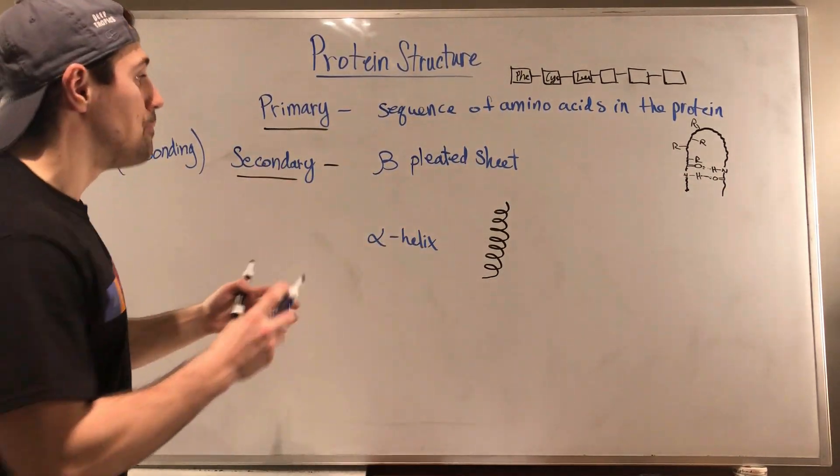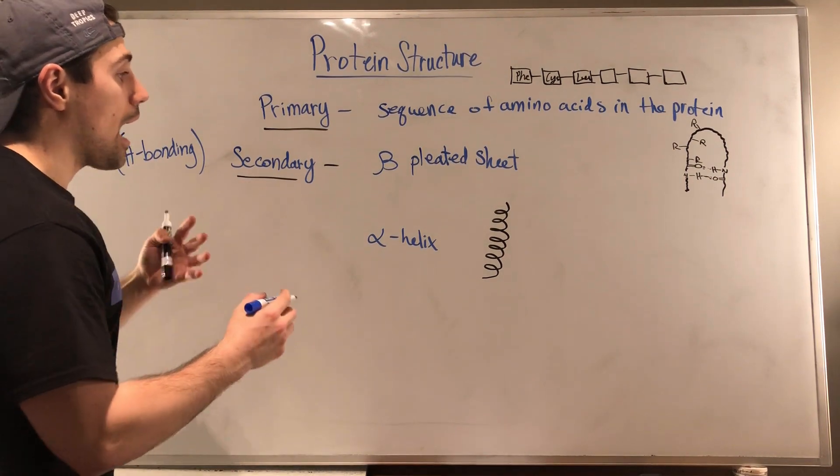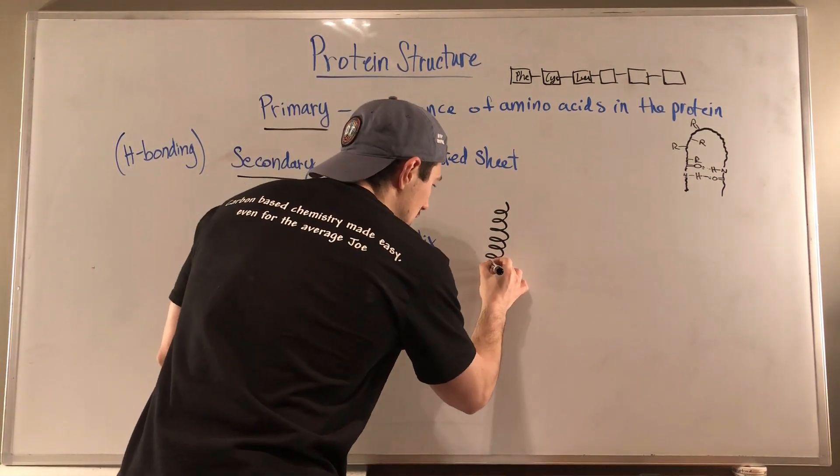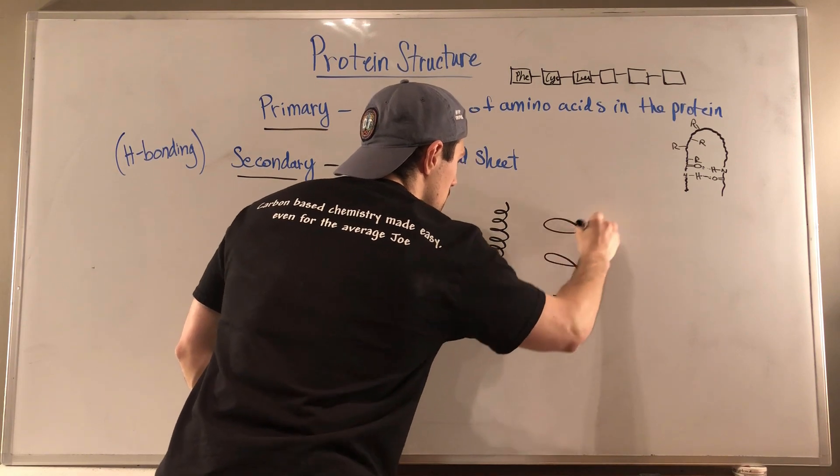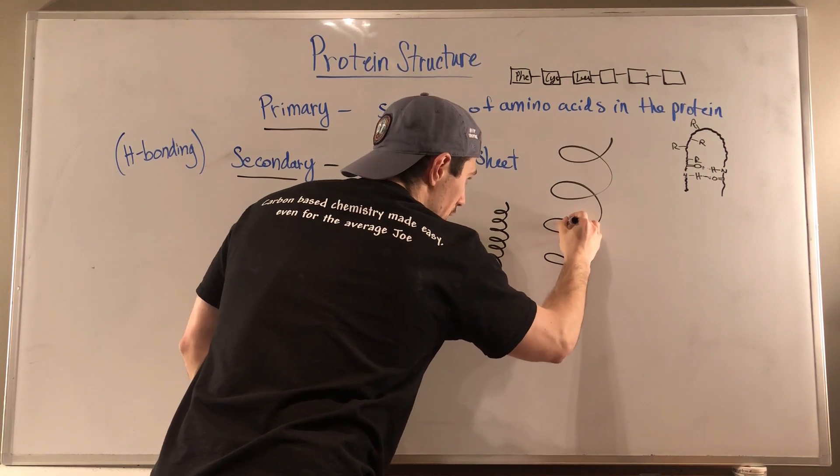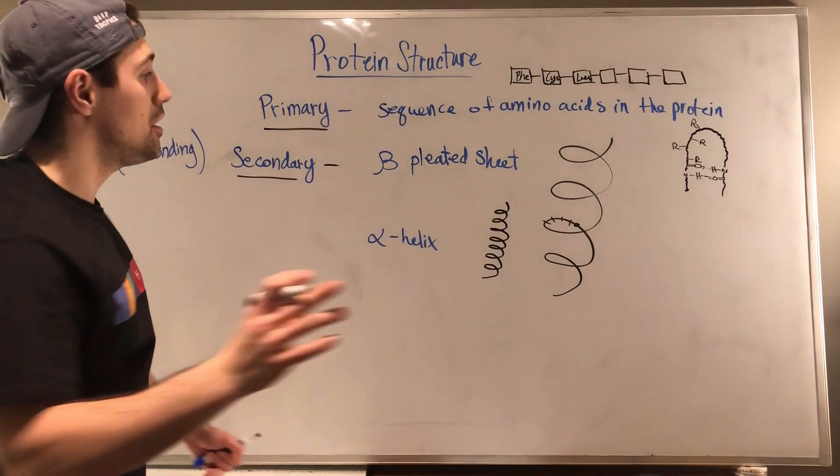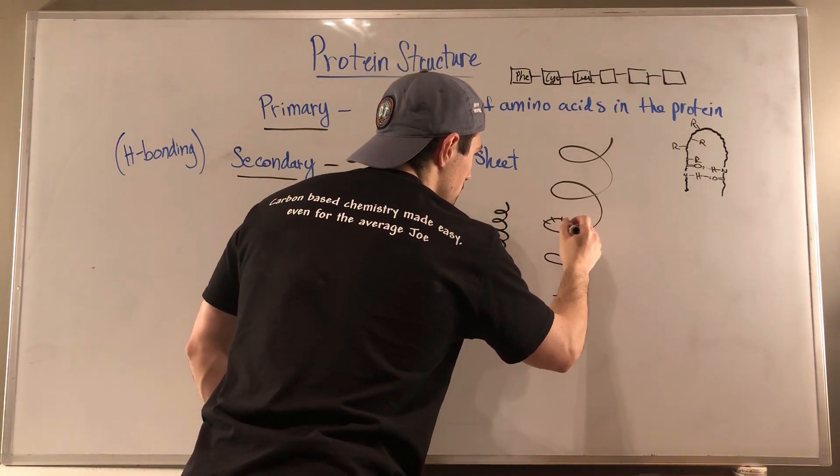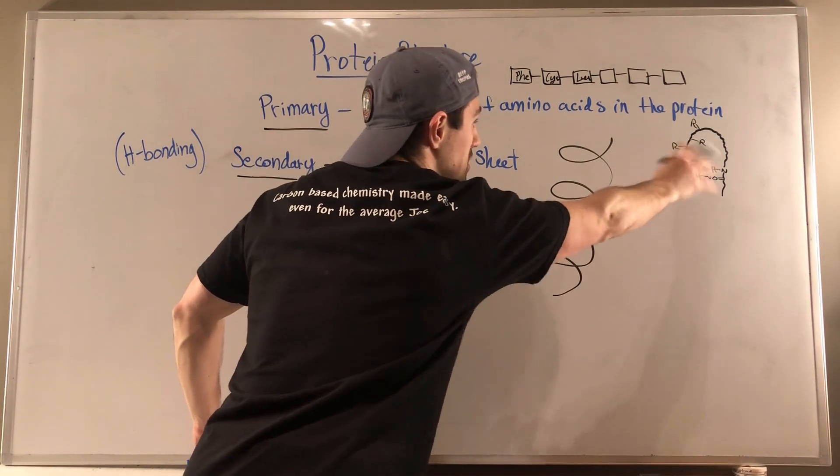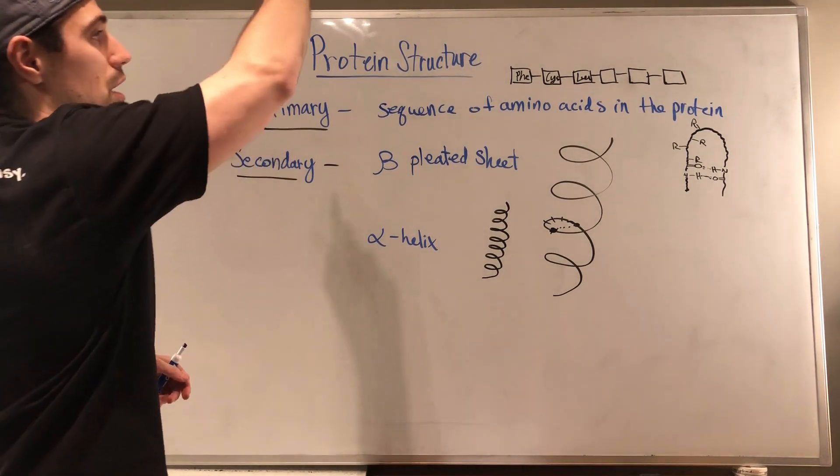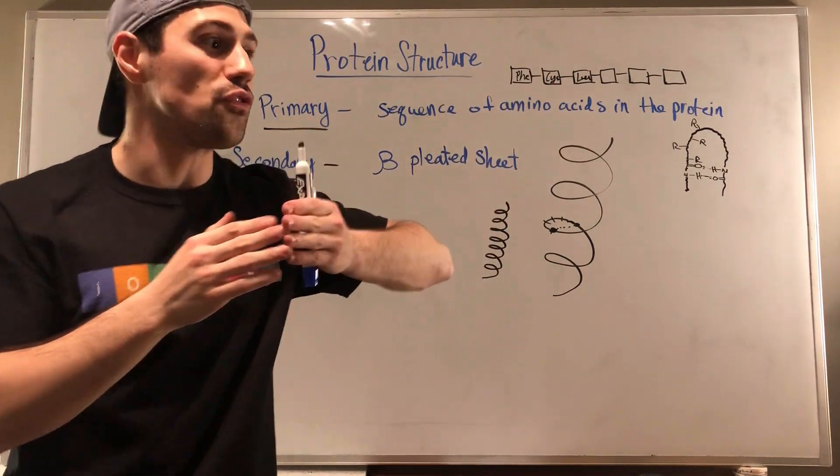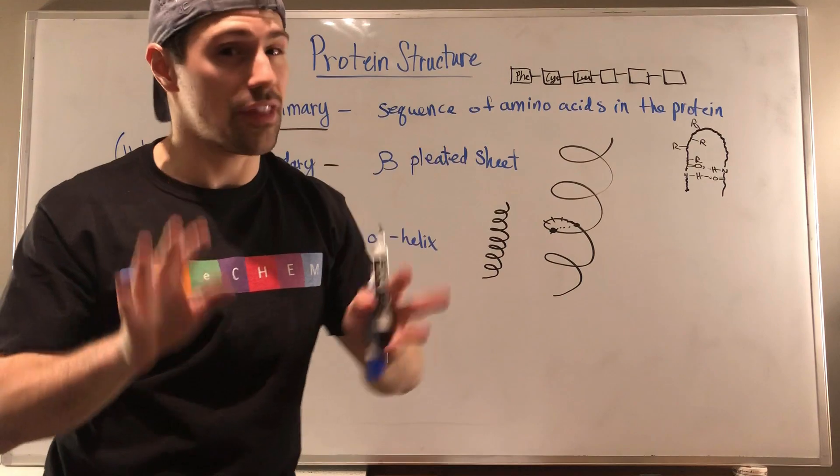So now, alpha helix, what's going on with that? Again, it comes down to hydrogen bonding. I can't draw this because it's going to look terrible, but what you have to just trust me that when an alpha helix is happening, you basically have an amino acid here and then four, roughly four, not always four, but roughly four amino acids. Four amino acids ahead, you get that same hydrogen bonding effect that we see over here in the beta pleated sheet.